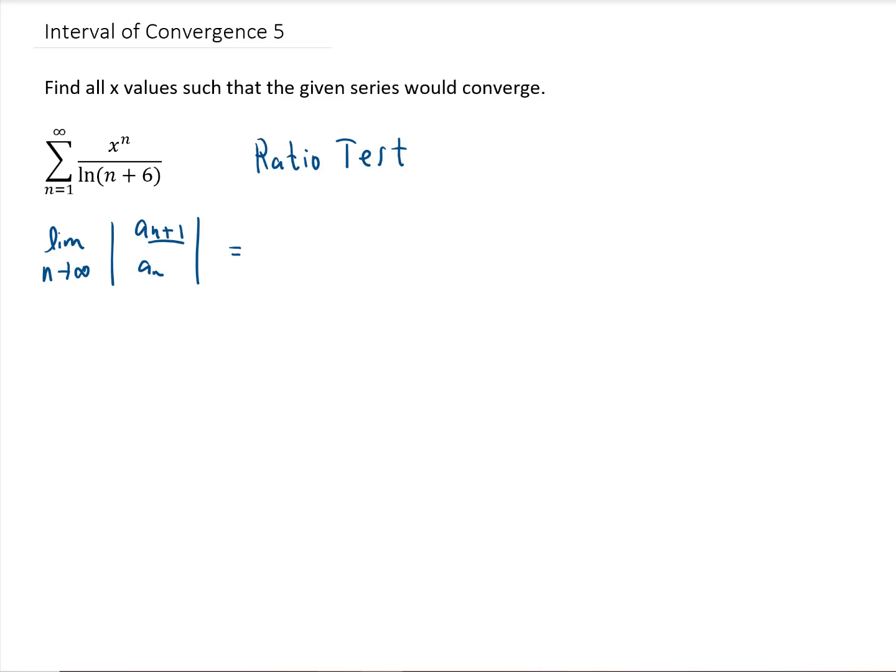And as always for the ratio test, we're going to take the limit as n goes to infinity of a sub n plus one over a sub n. a sub n plus one is what we get if we just replace the n with n plus one into this term inside the series.